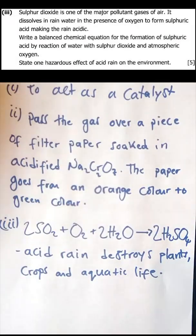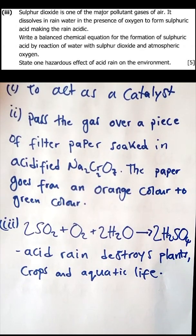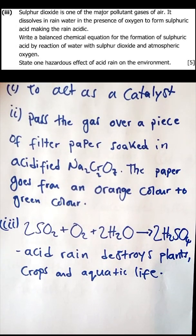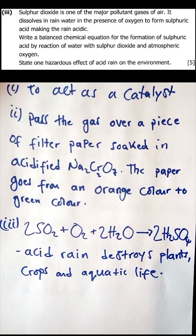Question 3: sulfur dioxide is one of the major pollutant gases of air. It dissolves in rain water in the presence of oxygen to form sulfuric acid, making the rain acidic. Write a balanced chemical equation for the formation of sulfuric acid by reaction of water with sulfur dioxide and atmospheric oxygen.